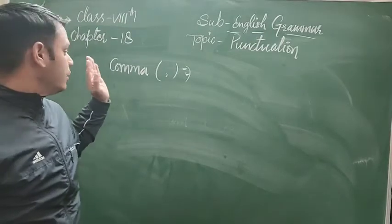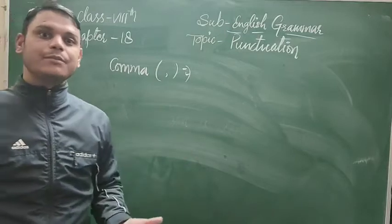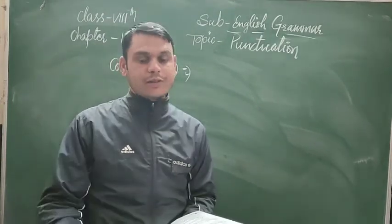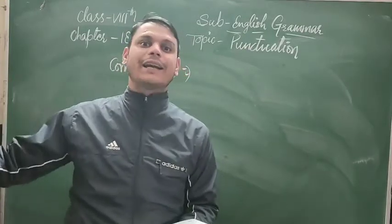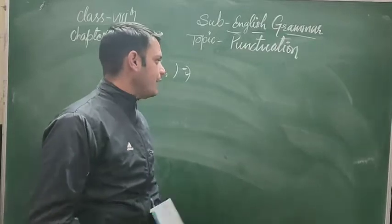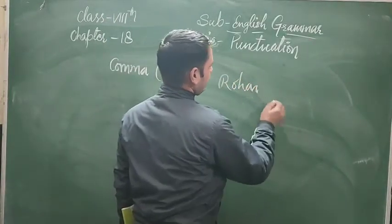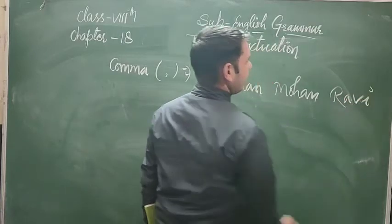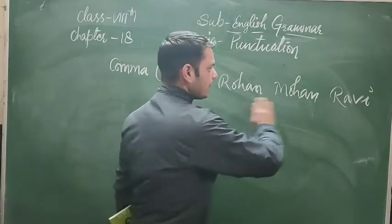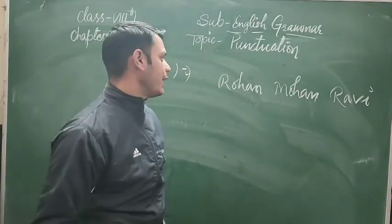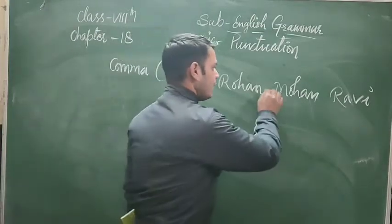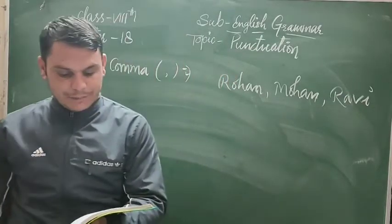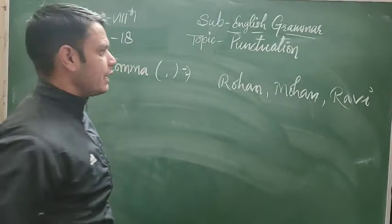Now we will see how we can use the comma punctuation mark in sentences. The comma is used to separate words or groups of words or parts of a sentence — यानि उनको अलग-अलग करने के लिए आप comma का use कर सकते हैं। For example, suppose I write: Ajay, Rohan, Mohan, Ravi — they are in a series. Group of words in a series: for example, 'Jaya, Sunita, Binaya and Kamala are playing in the garden.'